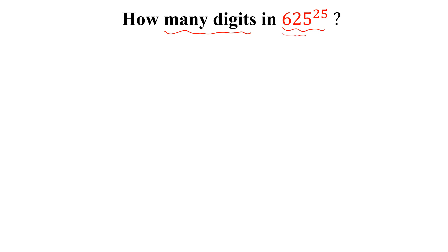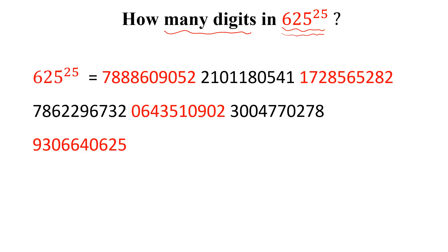First we will calculate this 625 to the power 25 and 625 to the power 25 is equal to this. Now in this red color there are 10 digits, so 10 and then in black color there are 10 digits, then 10, 10, 10, 10 and then 10.